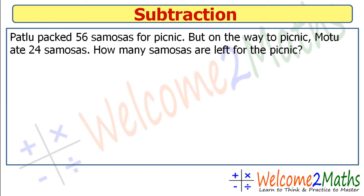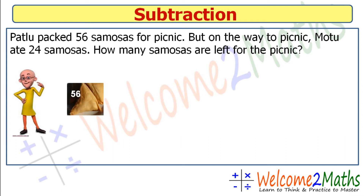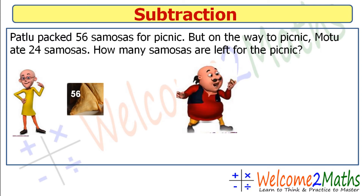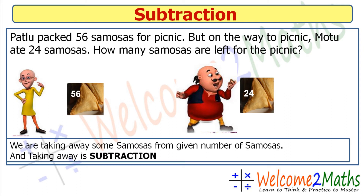Now let's see our question today. Patlou packed 56 samosas for a picnic, but on the way to the picnic, someone ate 24 samosas. How many samosas are left for the picnic? Here is Patlou — he packed 56 samosas, but 24 were eaten on the way.